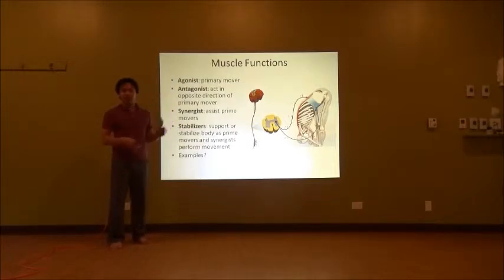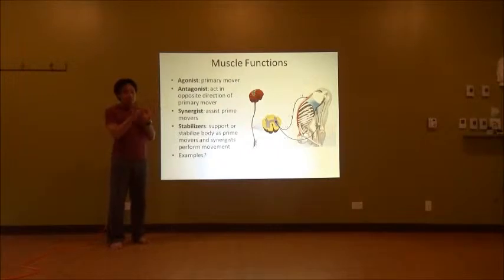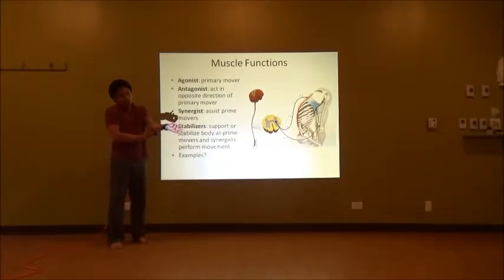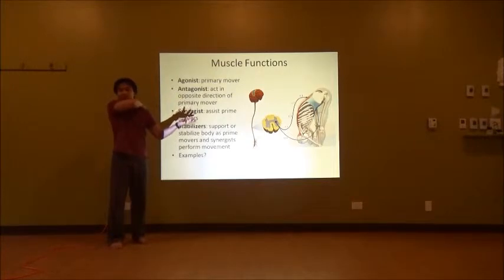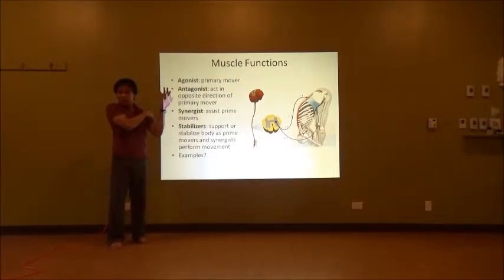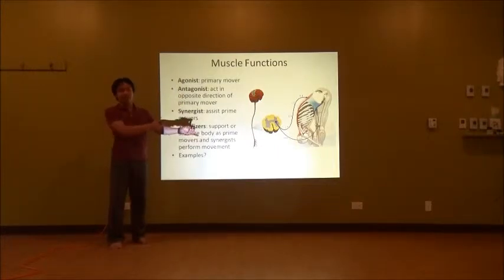The synergist helps the agonist — different muscles working together to produce a motion. And then the stabilizer holds everything in place so the motion can happen. For example, small muscles contracting around the elbow so it doesn't flop around, or muscles in the shoulder keeping the arm stable while the elbow moves.